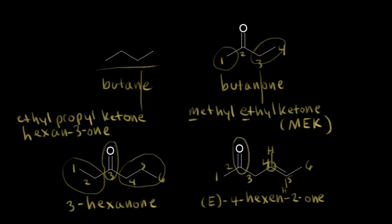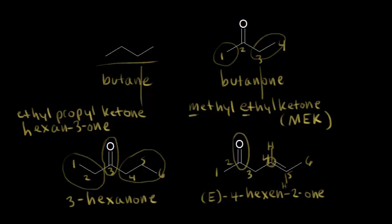If you wanted to name it another way, you could write E, then hex-4-en, where the four goes with the EN part telling you where the double bond is, and then 2-one as well. So E-hex-4-en-2-one, whichever way you prefer.